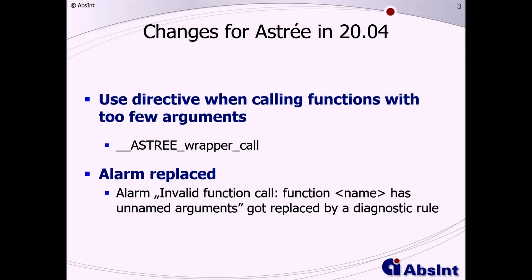When you intentionally call a function with too many or too few arguments in the wrapper file, you now need to use the directive Astray wrapper call. It will then emulate a function call with arbitrary full range arguments.